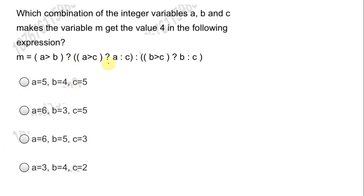Here we have the nesting of ternary operators. The question is: which combination of integer variables a, b, and c makes the variable m get the value 4? To solve this, we consider all the options. If a is greater than b, we check whether a is greater than c also — if so, return a, otherwise return c. Then if b is greater than c, return b, otherwise return c. So we are essentially finding the largest of a, b, and c.